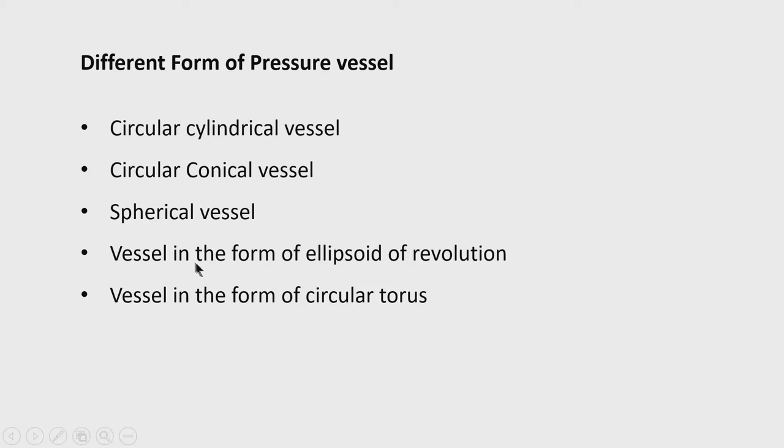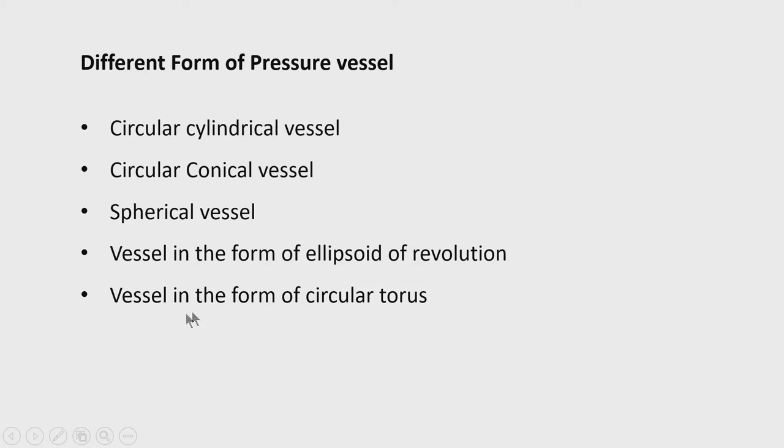Pressure vessels are in demand in industry for carrying LPG, oxygen cylinders, petroleum liquid, or gaseous substances stored and carried to site for different uses. Different forms of pressure vessels are found: circular cylindrical, circular conical, spherical, ellipsoidal of revolution, and circular torus. We will discuss each one and see how the theory is developed — membrane analysis for axisymmetric loading — to find meridional stress n_phi and circumferential stress n_theta for design.